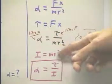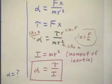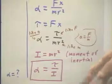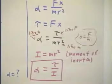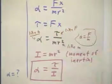We designate it by I, and we call it the moment of inertia of this mass at the distance r. So when a mass m is a distance r from the center of rotation, then it contributes mr squared to the moment of inertia.